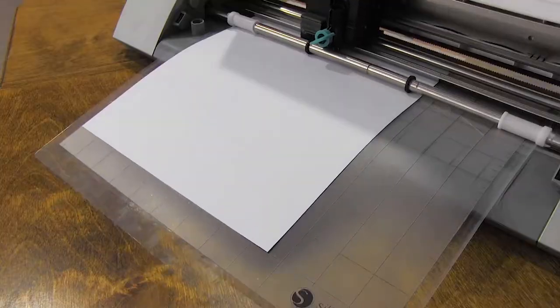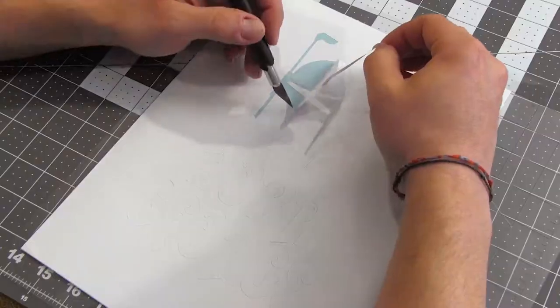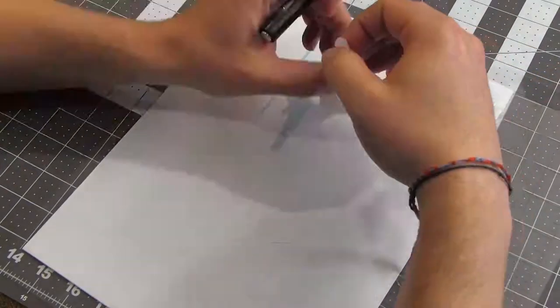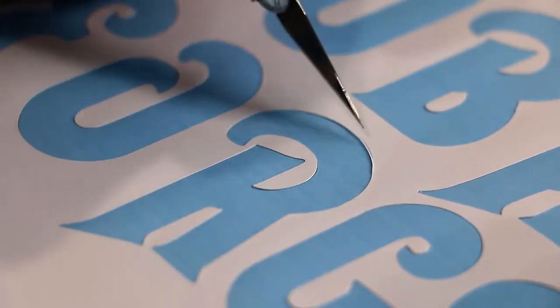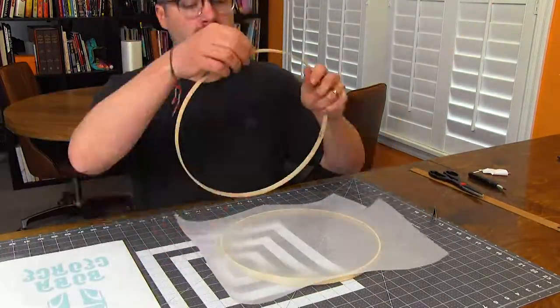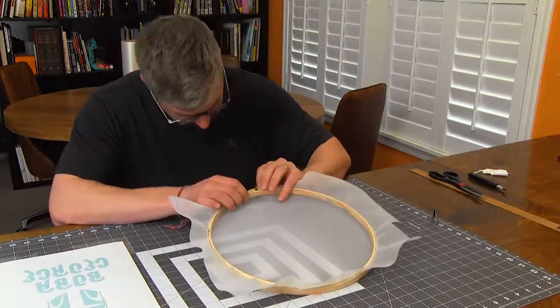This type of vinyl has a self-adhesive back, which makes connecting it to the screen really easy. Some of the cuts weren't perfect, so I did a few fixes with an exacto blade. Then I cut out enough screen material to insert into the hoop that was a little bit bigger than the shirt design.